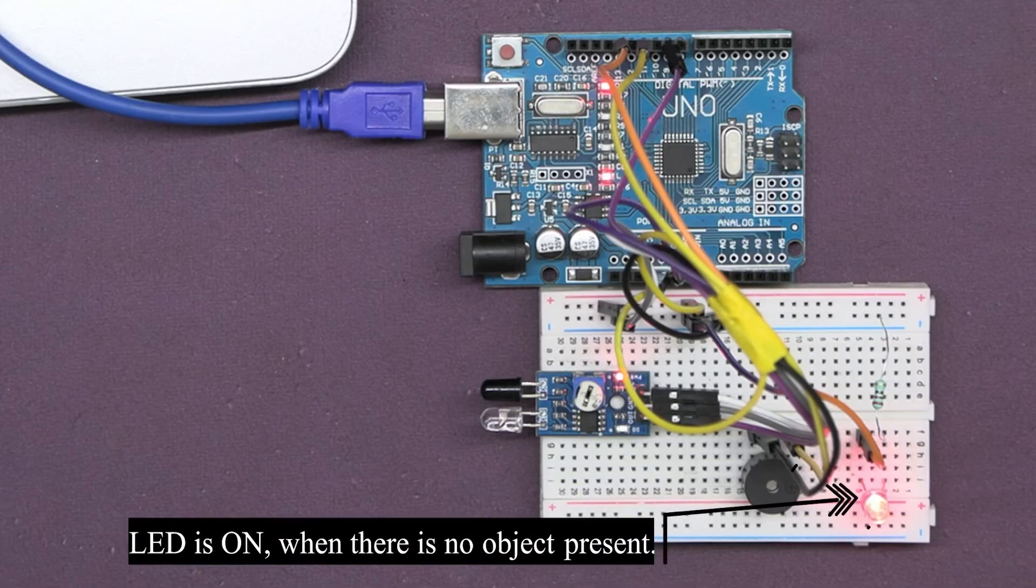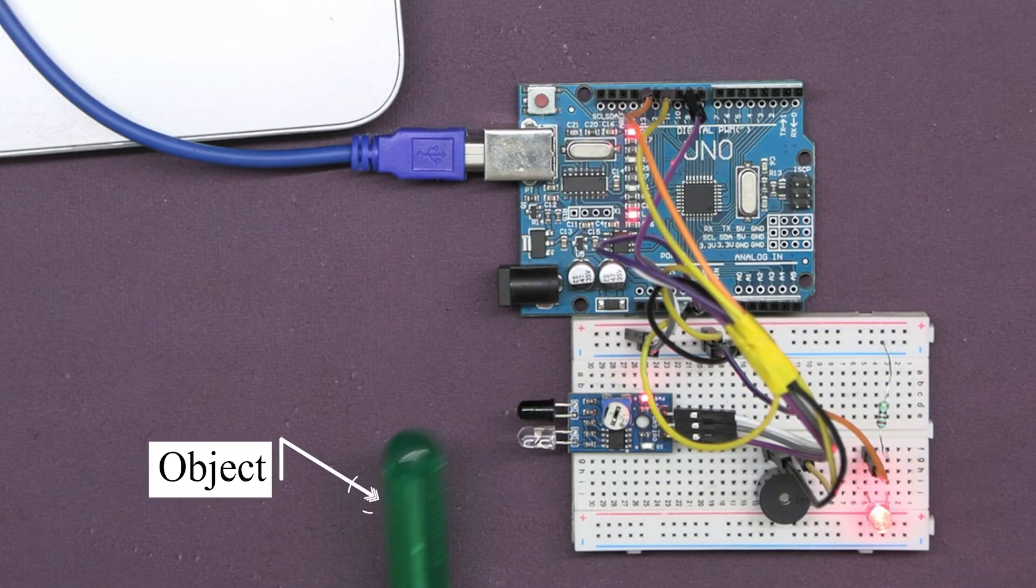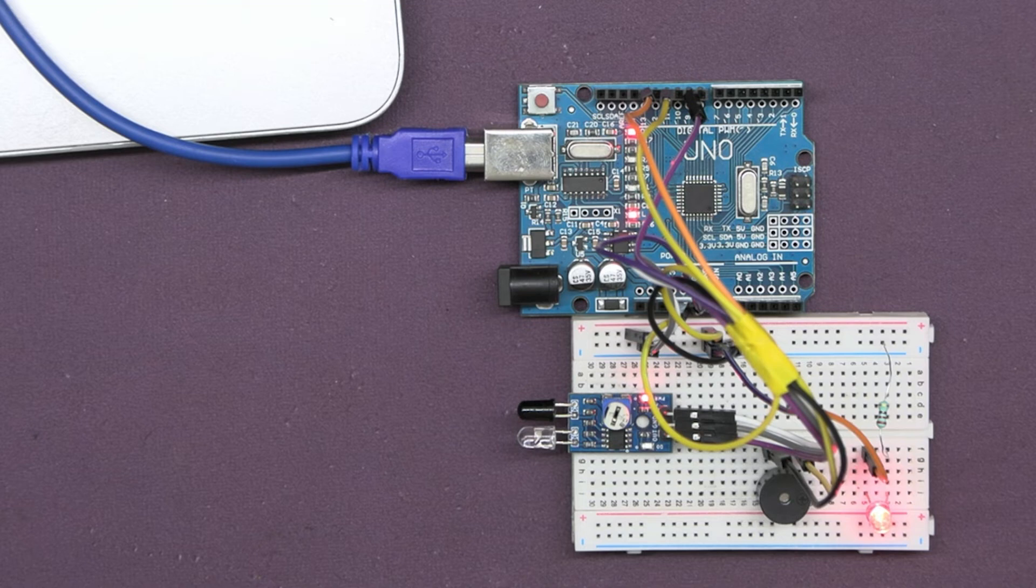Now challenge yourself, initially switch on the LED permanently and make the buzzer off. Whenever an IR sensor detects any object, the LED should get off and buzzer should get on at that time, without making any change in connections.